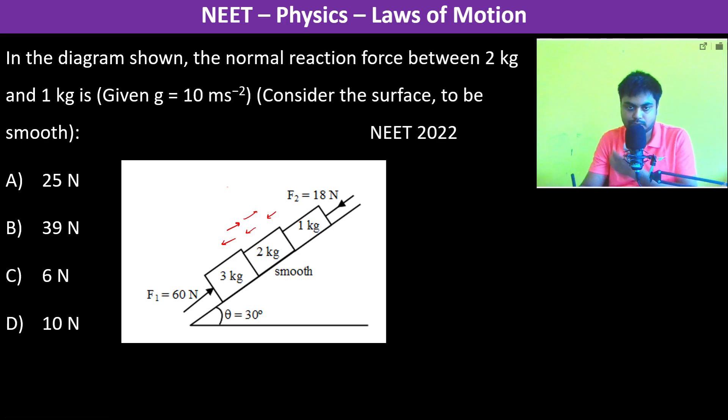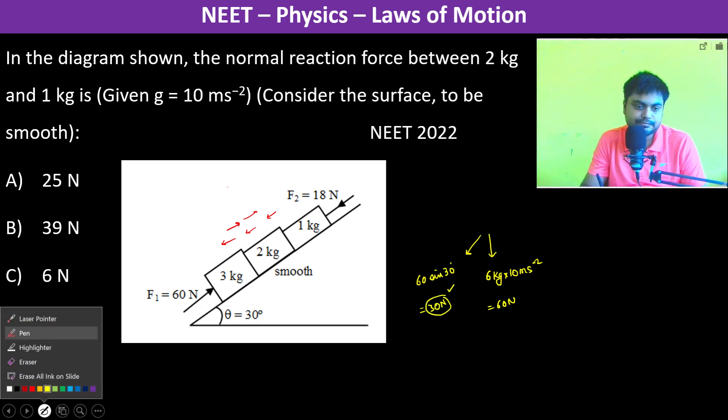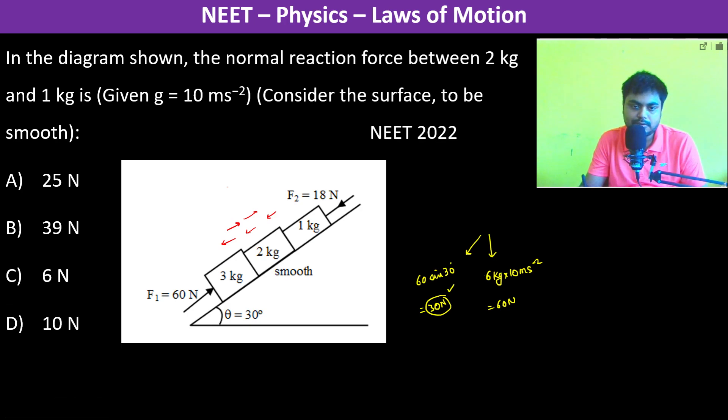Let us see what is the downward force. By mg, it's going to be 6 kg into 10 meter per second square, which is 60 newtons. In this direction, this becomes 60 into sine 30, which is 30 newtons. Therefore, 30 newtons force is in the downward direction, which is along the inclined plane.